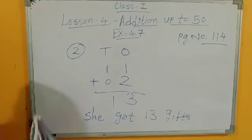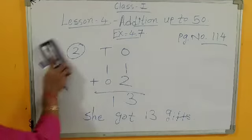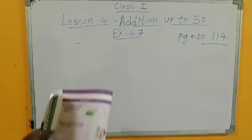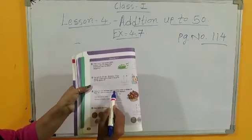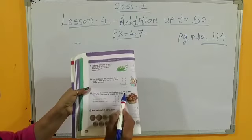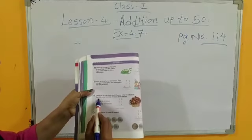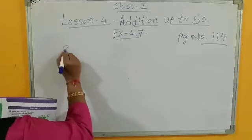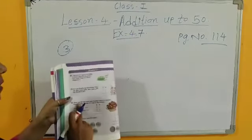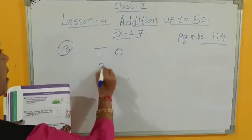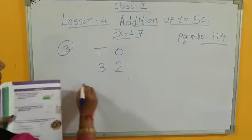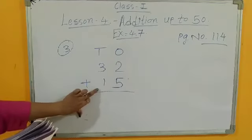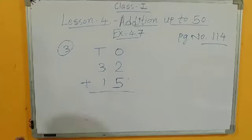Then next, number 3. In number 3, there are 32 red roses and 15 yellow roses in a basket. Find the total number of roses in the basket. How many roses? 32 red. आपको already यह दिया है, plus 15. 32 red roses है and 15 yellow roses, तो total roses कितने हैं.